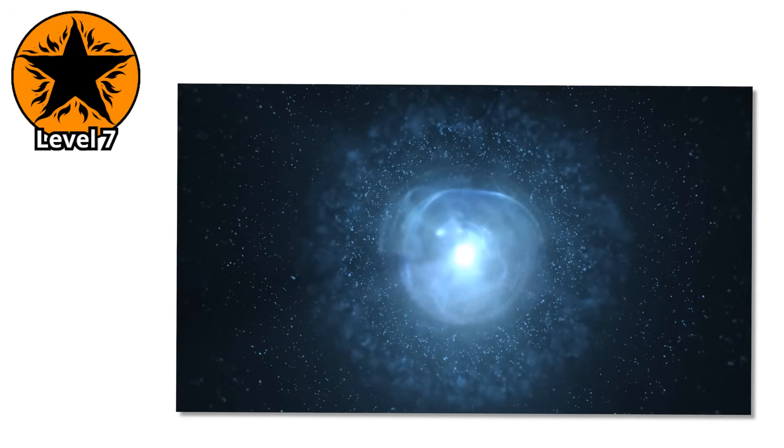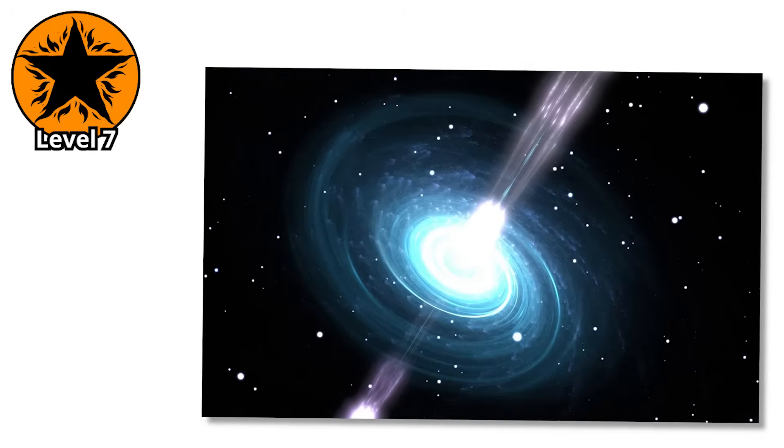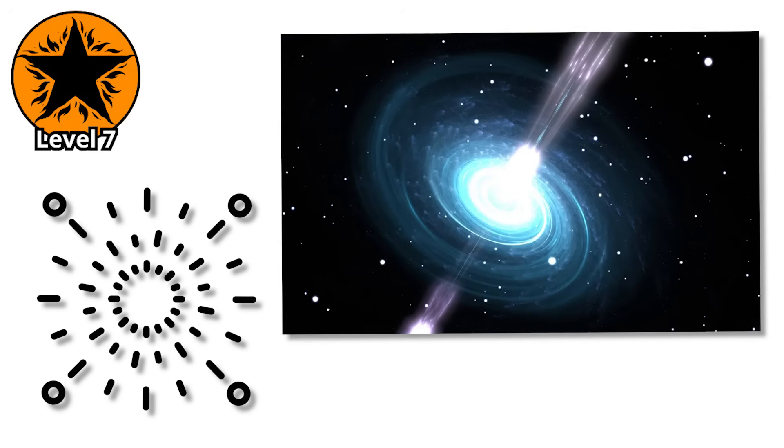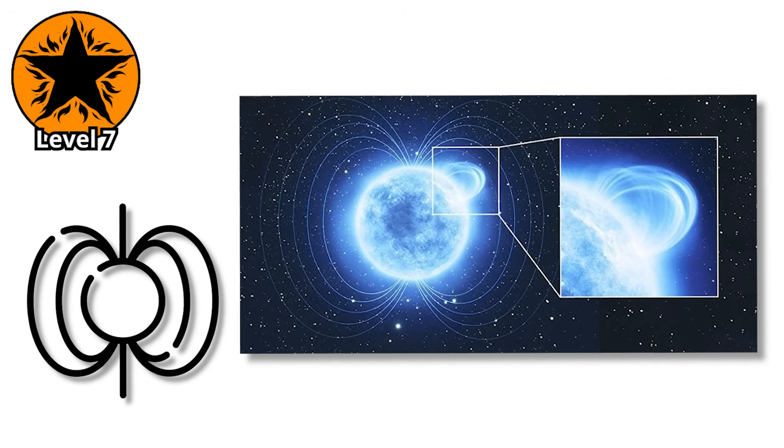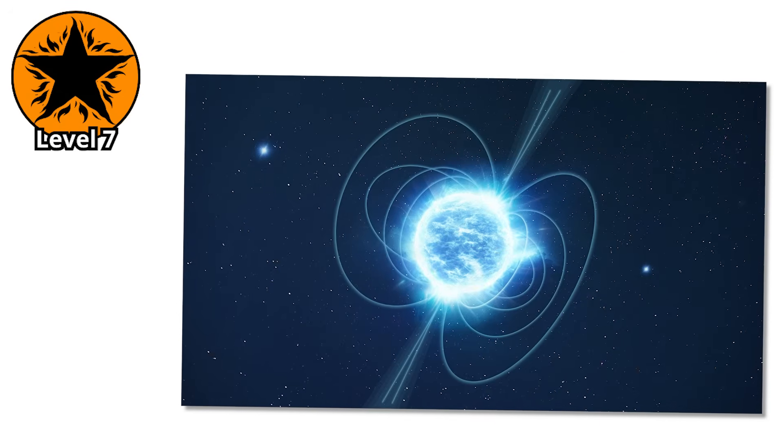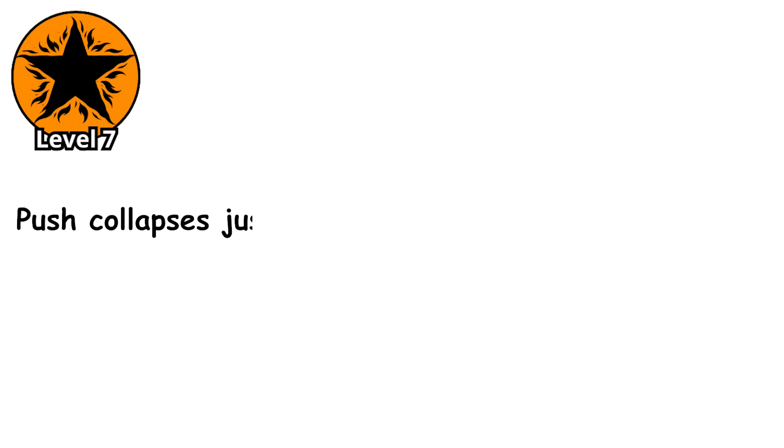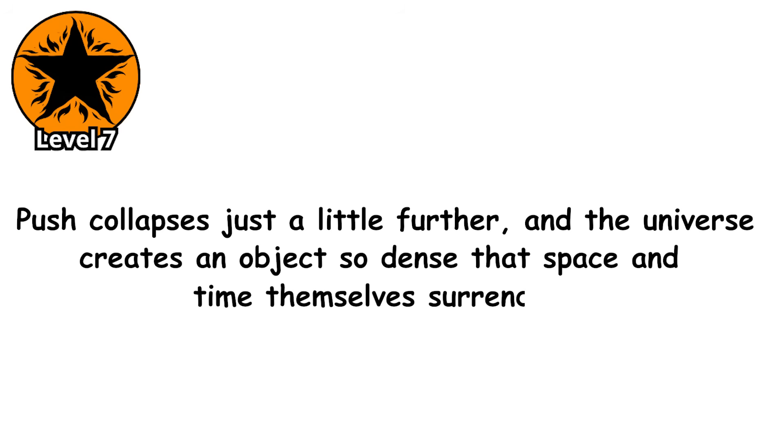Some neutron stars spin hundreds of times per second, their intense magnetic fields beaming radiation into space like cosmic lighthouses. These pulsars were once mistaken for alien signals when first discovered. Their regularity seemed too perfect to be natural. Push collapse just a little further, and the universe creates an object so dense that space and time themselves surrender.